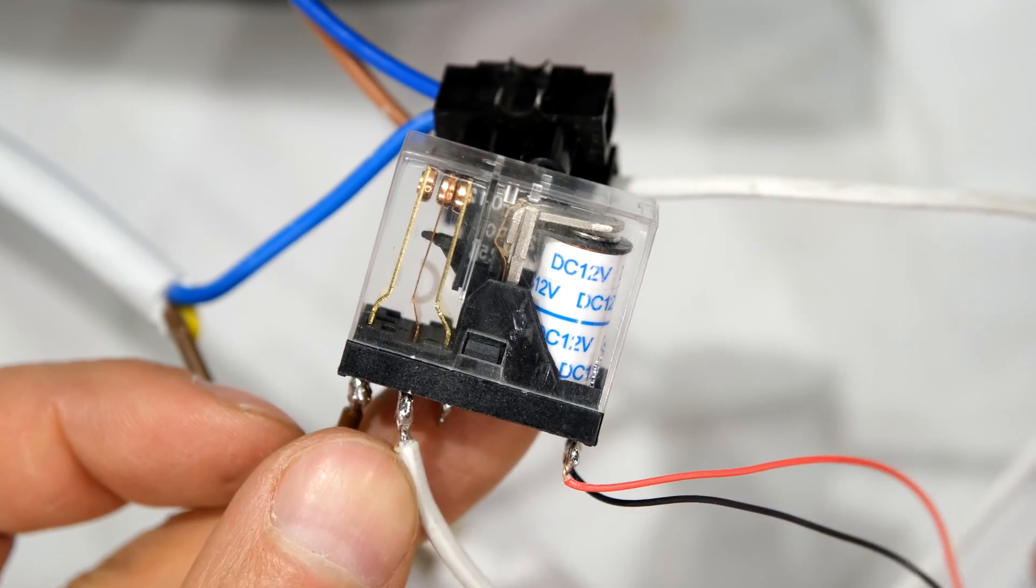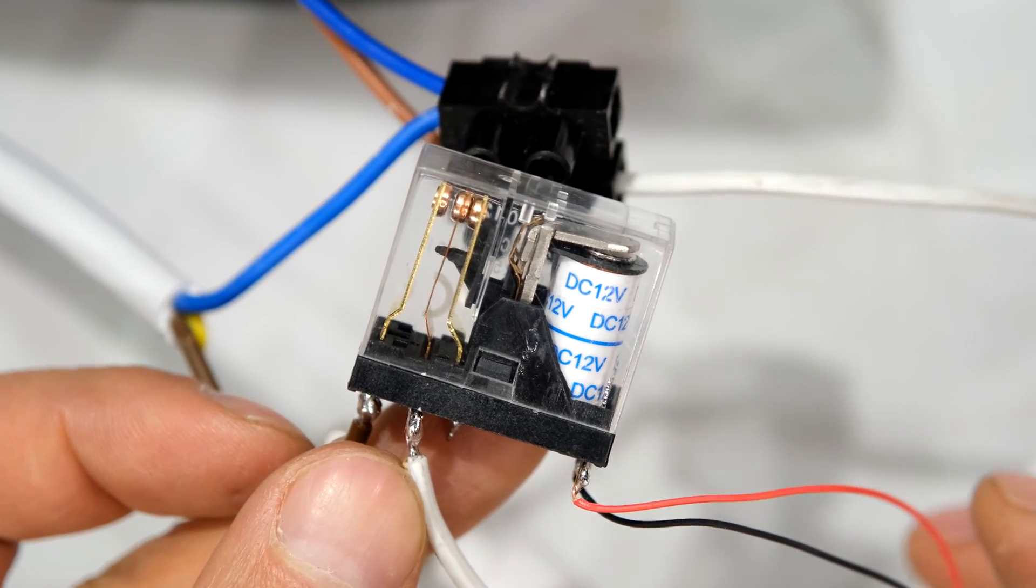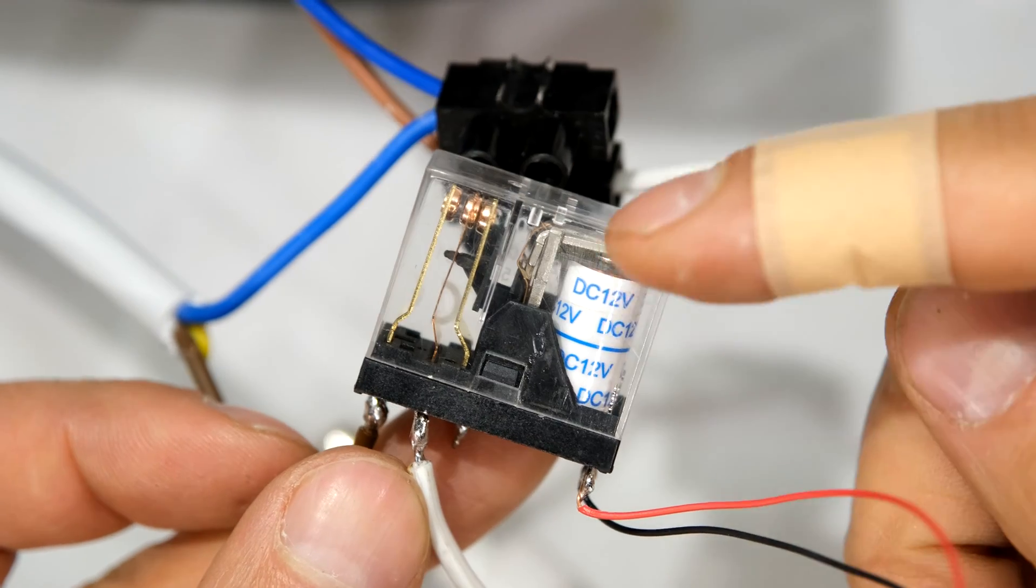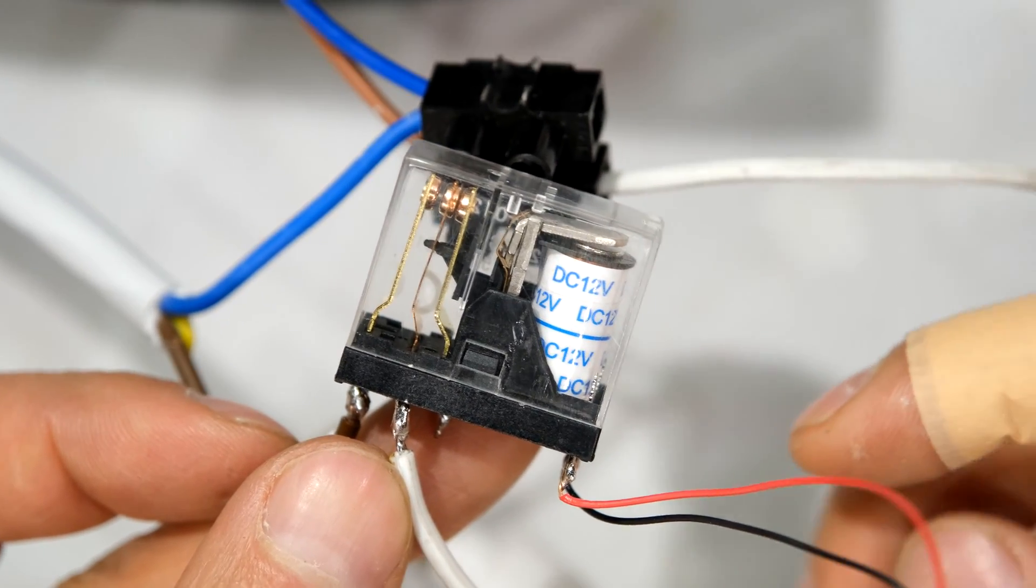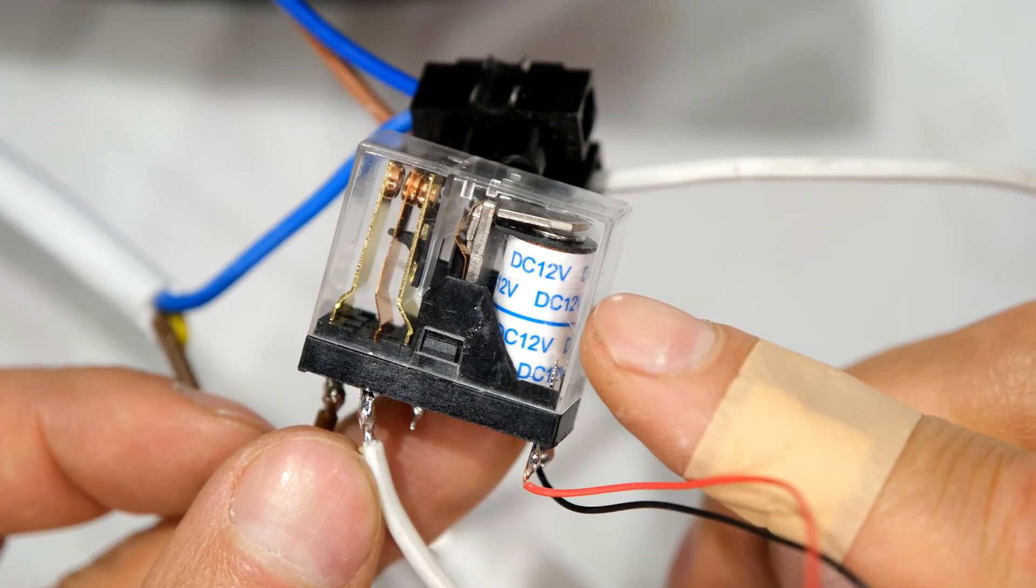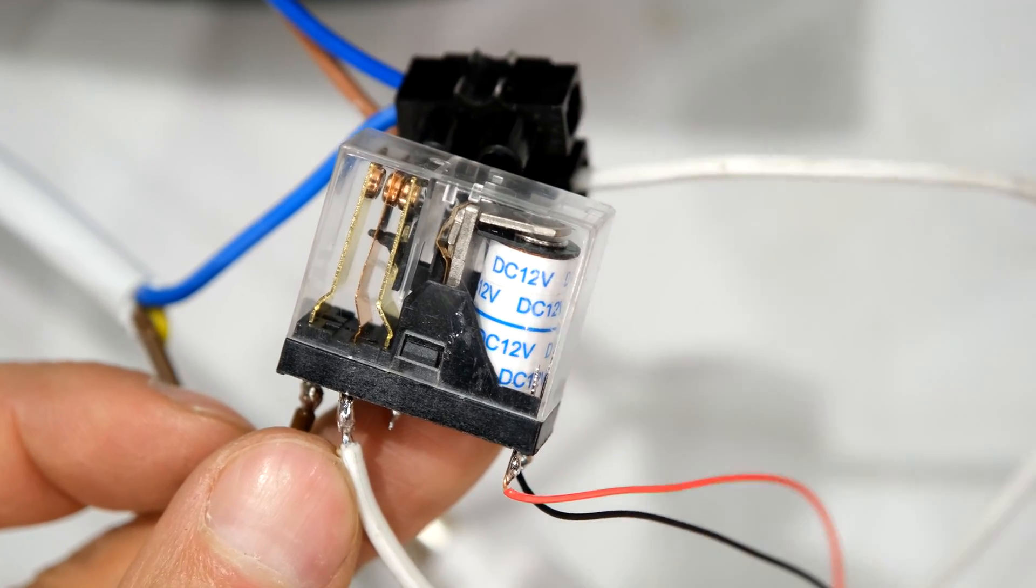I'm now using a relay to control this AC circuit. So this is like a switch but that is controlled with a voltage. Now this is a 12 volt relay so I just need to connect this side to a 12 volt source.